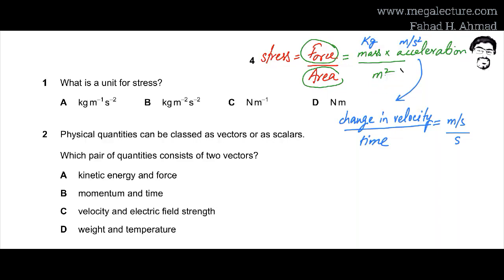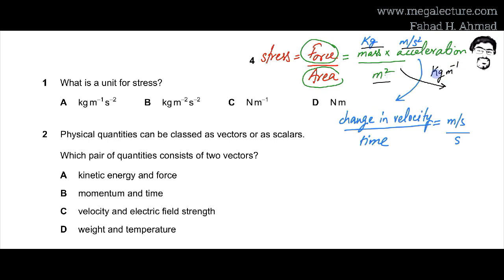Gathering all the units together: it's kg × m·s⁻² divided by m², so the M at the top divided by m² gives m⁻¹, and dividing by second squared gives s⁻². The overall unit for stress is kg·m⁻¹·s⁻², so the correct answer is option A.